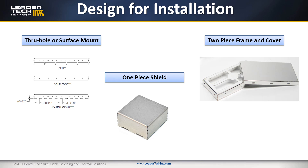When looking at a shield, you have to decide whether you're going to do a one-piece or a two-piece. A one-piece is just a box that is directly soldered to the circuit board and then it's not coming off. The other option is a two-piece frame and cover — the frame is soldered down to the circuit board and then we design a removable cover. This allows you to access components underneath while still getting great shielding effectiveness.